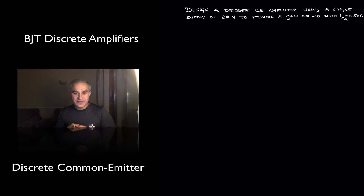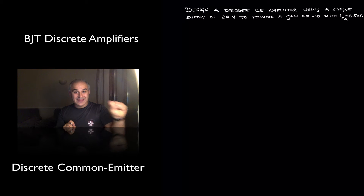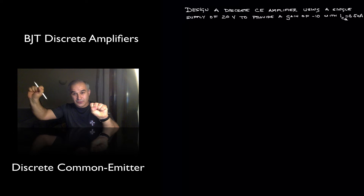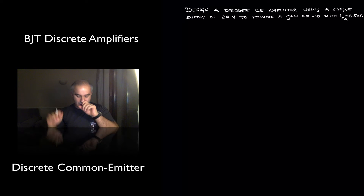A common emitter amplifier basically means that the input is going to be at the base and the output at the collector, and the emitter is common to the input and output.